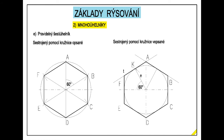Sestrojení pravidelného šestiúhelníku pomocí kružítka vychází ze znalostí konstrukce úhlu 60 stupňů, kterou jste již poznali. Při konstrukci dle kružnice vepsané si uvědomte, že strana šestiúhelníku je tečnou této kružnice.